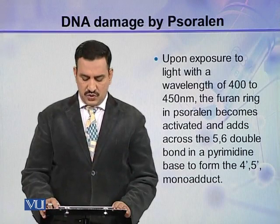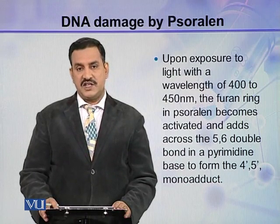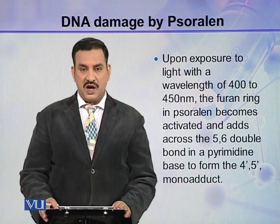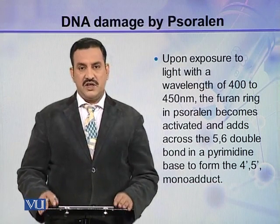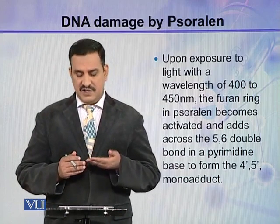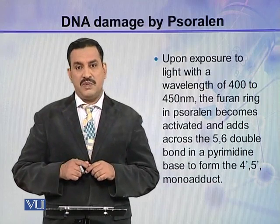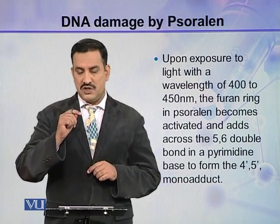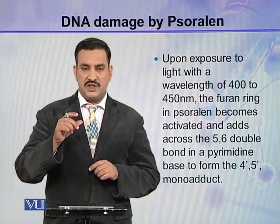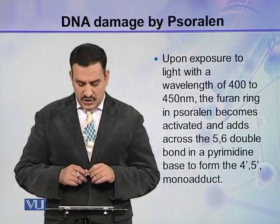Upon exposure to light with a wavelength of 400 to 450 nanometers, the furan ring in psoralen becomes activated and adds across the carbon-5 and carbon-6 double bond in a pyrimidine base to form a 4-prime and 5-prime monoadduct. When psoralen is photoactivated, its furan ring is added to the pyrimidine base between carbon number 5 and carbon number 6, since a double bond is present between these two carbons in a pyrimidine. In this way it forms a monoadduct.